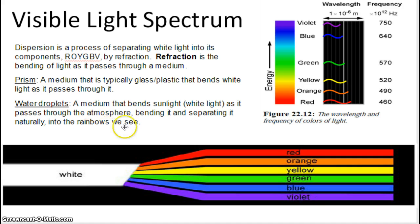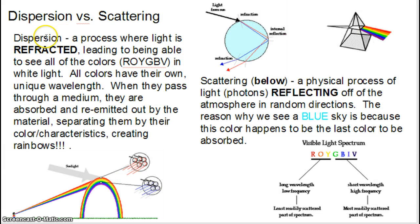This happens naturally too, when water droplets — a medium that bends sunlight, or white light, as it passes through the atmosphere — bend it and separate it naturally into the rainbows that we see. When we talk about dispersion, we're looking at the concept of refraction. This is a process that separates the light into characteristic colors.